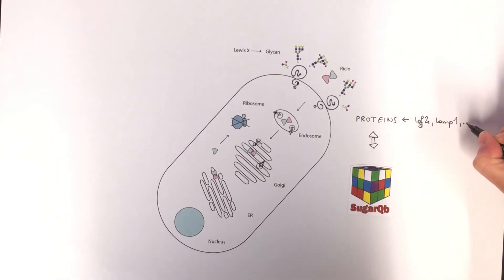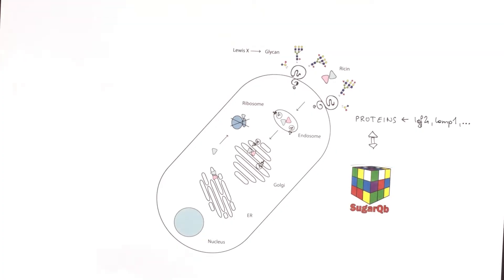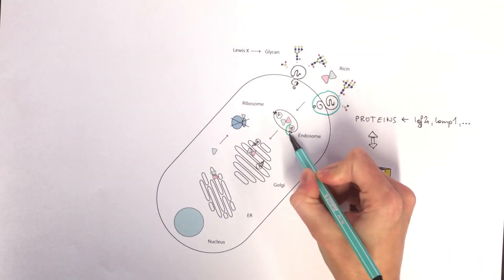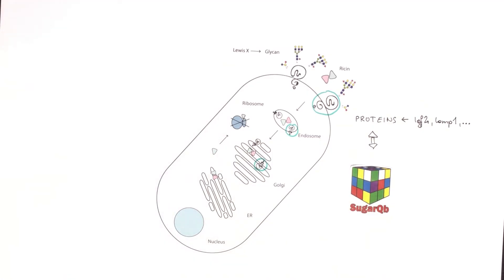These factors are present on the cell surface, the early uptake machinery and the Golgi. Deleting them makes cells indeed resistant to Ricin.